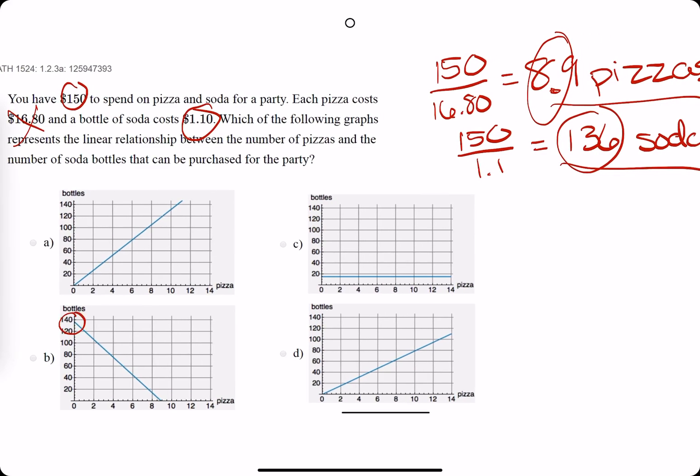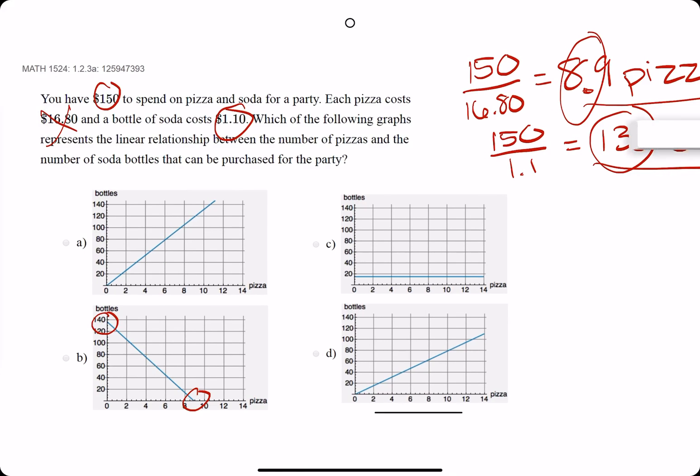136-ish. 8.9-ish. That would be option B. Bring out our eraser. And we have option B as our answer.